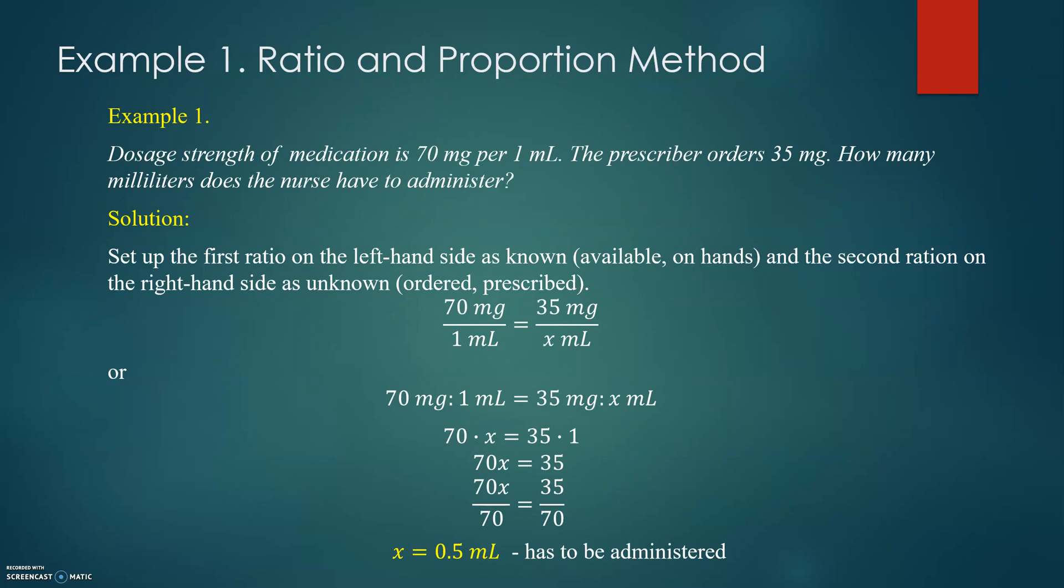Example number 1, ratio and proportion method. Dosage strength of medication is 70 mg per 1 milliliter. The prescriber orders 35 mg. How many milliliters does the nurse have to administer? Ask this question: Do I need to administer more than 1 milliliter or less than 1 milliliter? Please take a look. 1 milliliter contains 70 mg of medication, so you need to administer less than 70 mg, which means you should expect less than 1 milliliter of solution to be administered. So all the time: estimate, estimate, estimate.